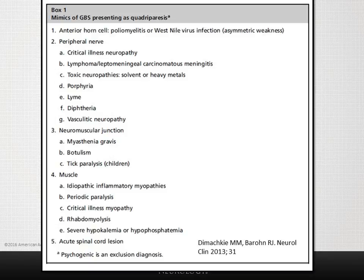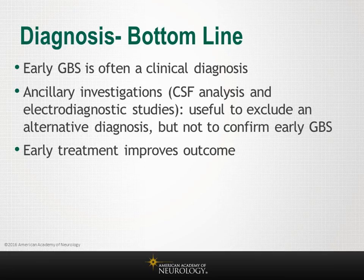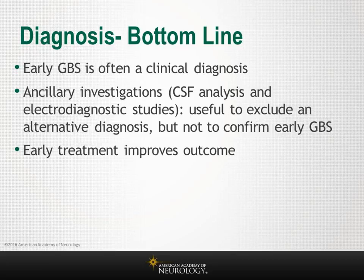At the muscle level, idiopathic inflammatory myopathies can occasionally present rapidly. Rhabdomyolysis, critical illness myopathy, periodic paralysis, secondary hypokalemia with paralysis, and hypophosphatemia are other muscle-level considerations. The bottom line is that early Guillain-Barré syndrome is often a clinical diagnosis. Ancillary investigations such as CSF analysis and electrodiagnostic studies are useful to exclude alternative diagnoses but may not confirm early GBS.